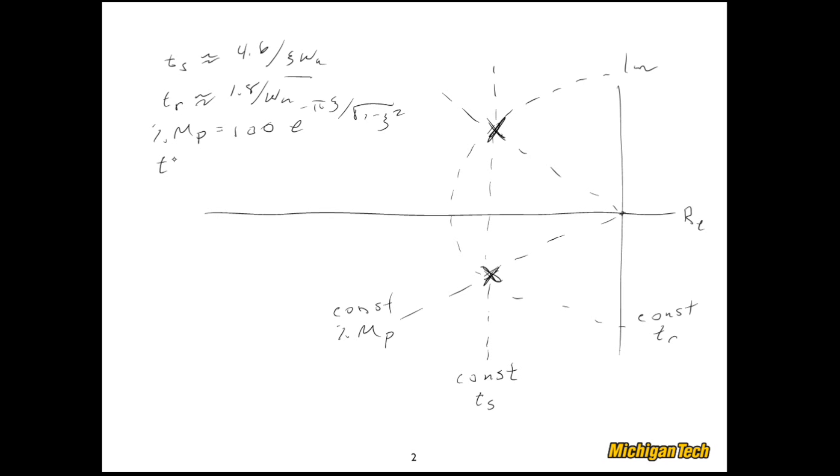And our last one was the time of the peak overshoot which is pi over omega d. Omega d is the distance that these poles are from the real axis.